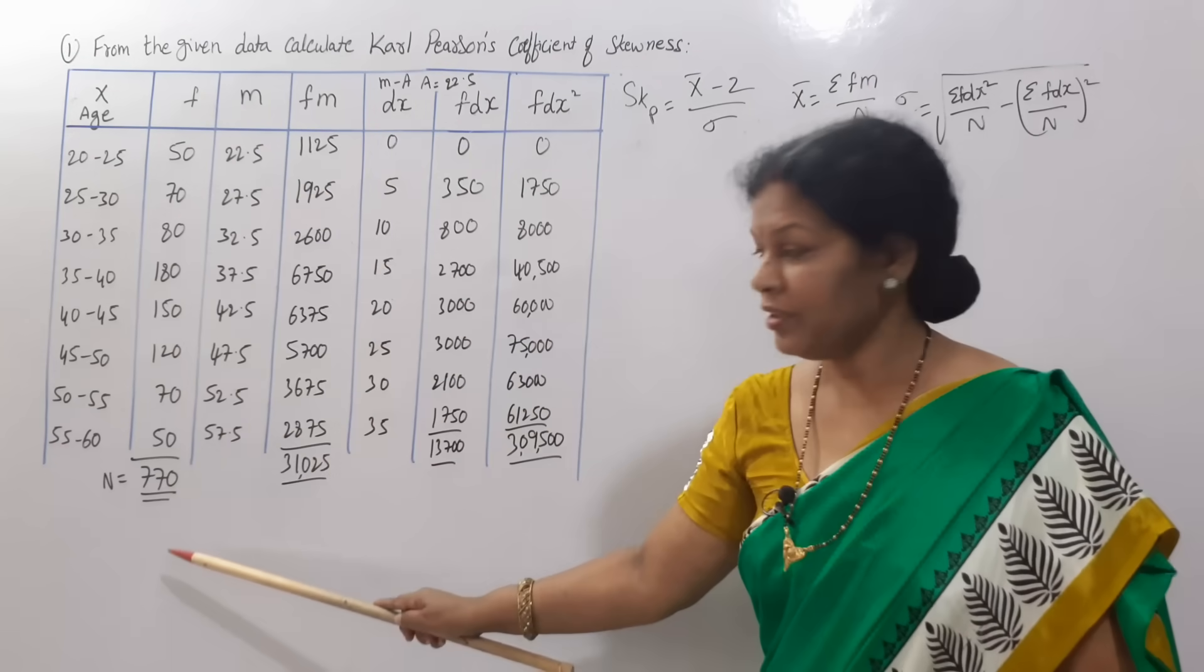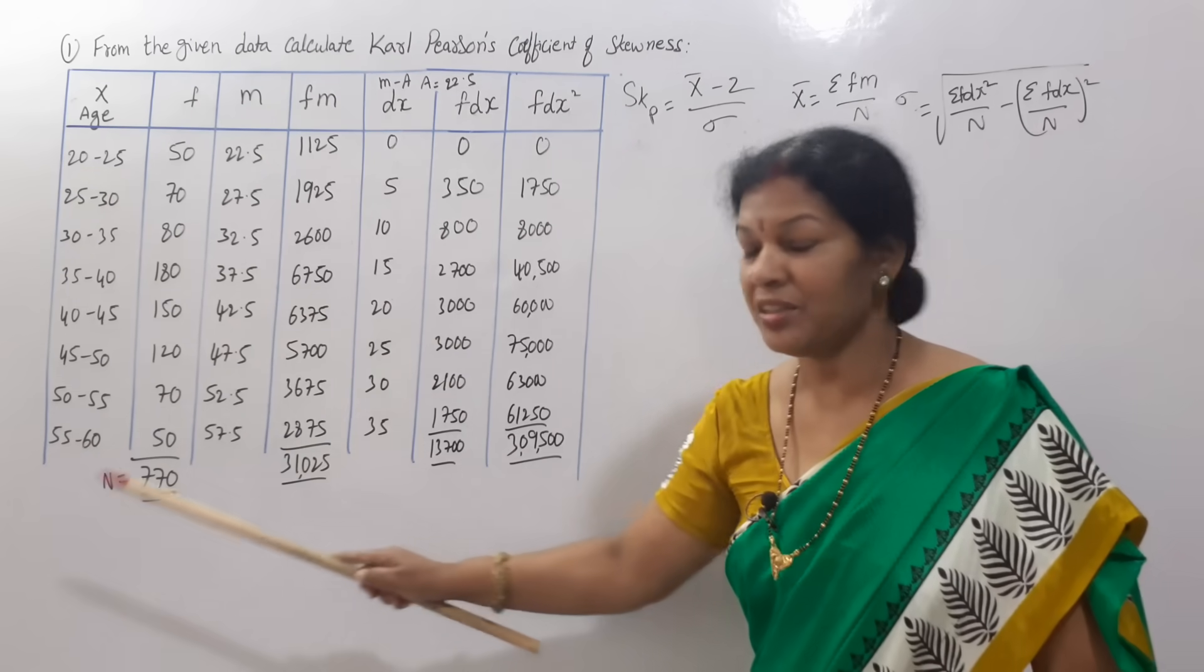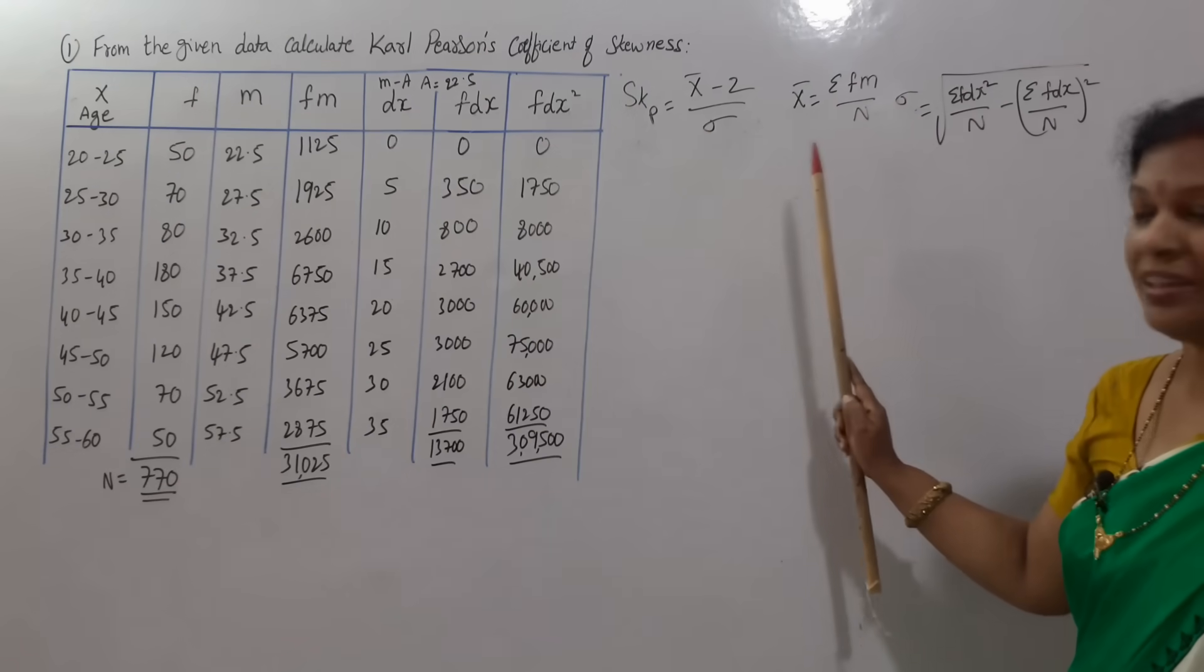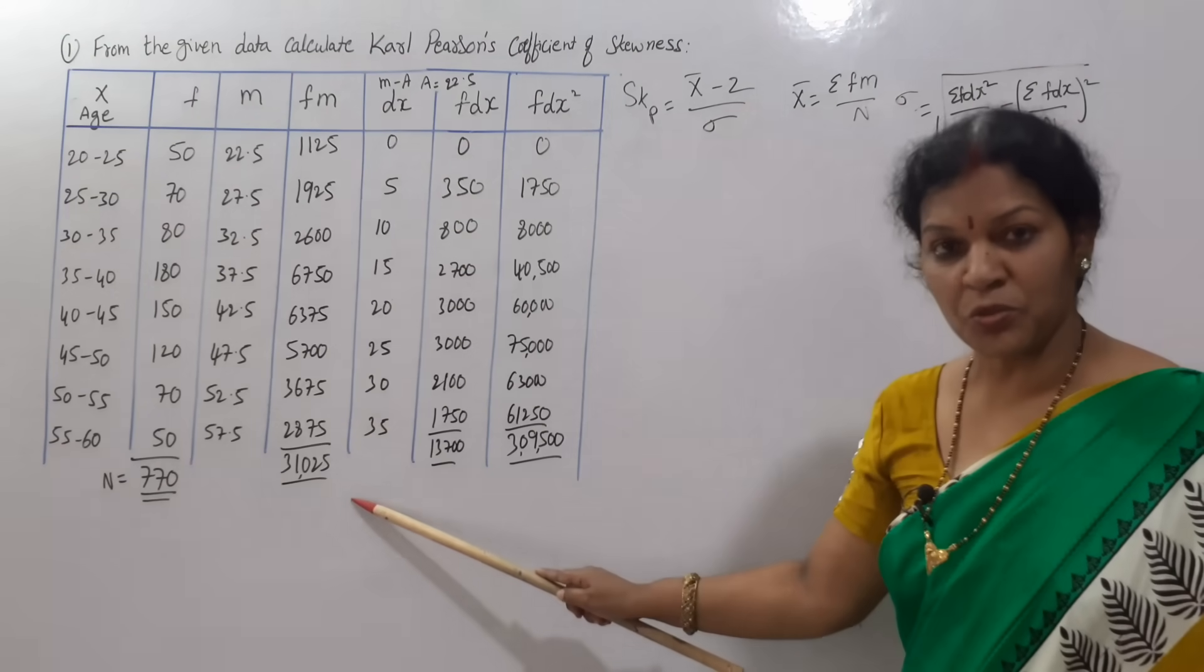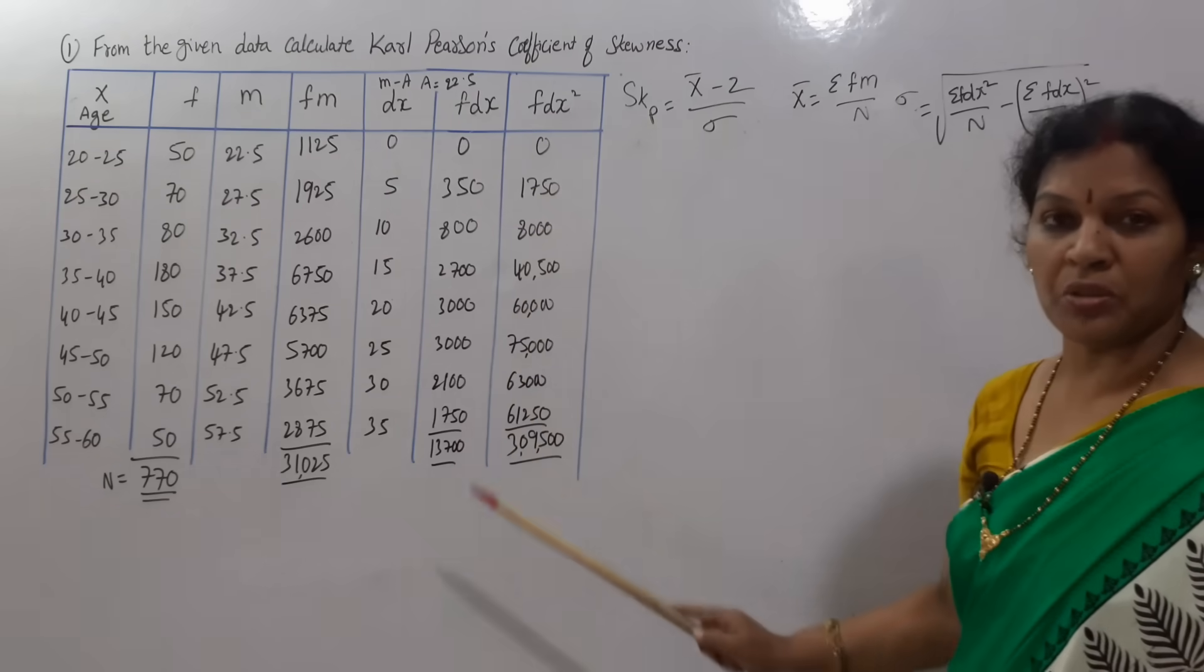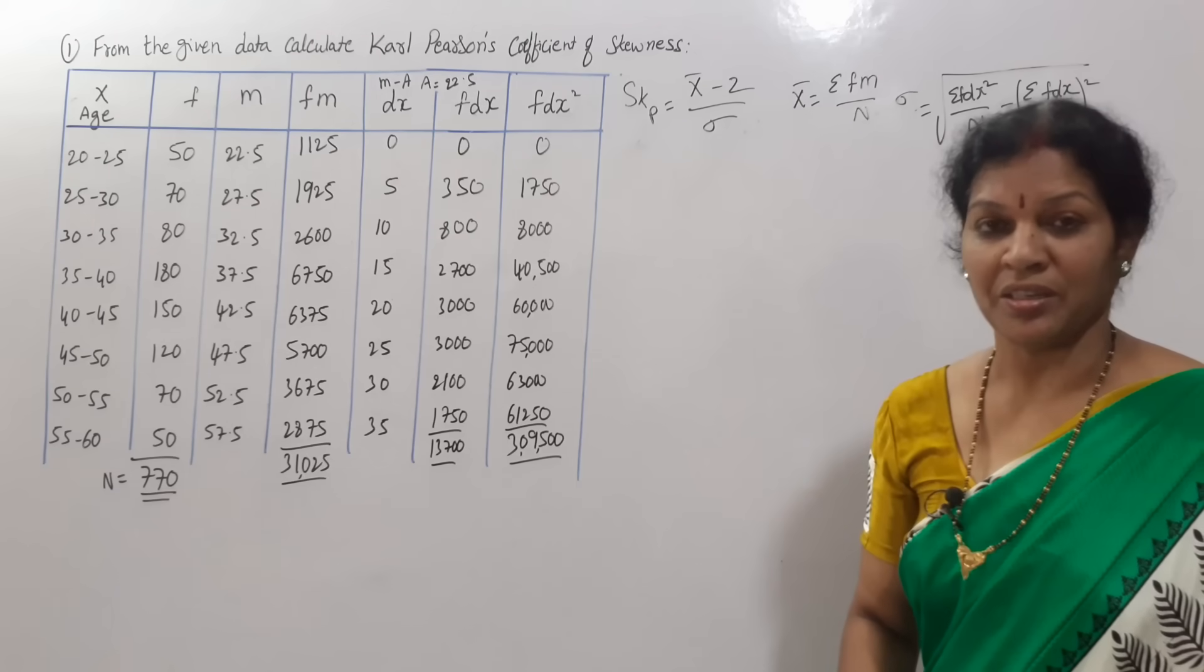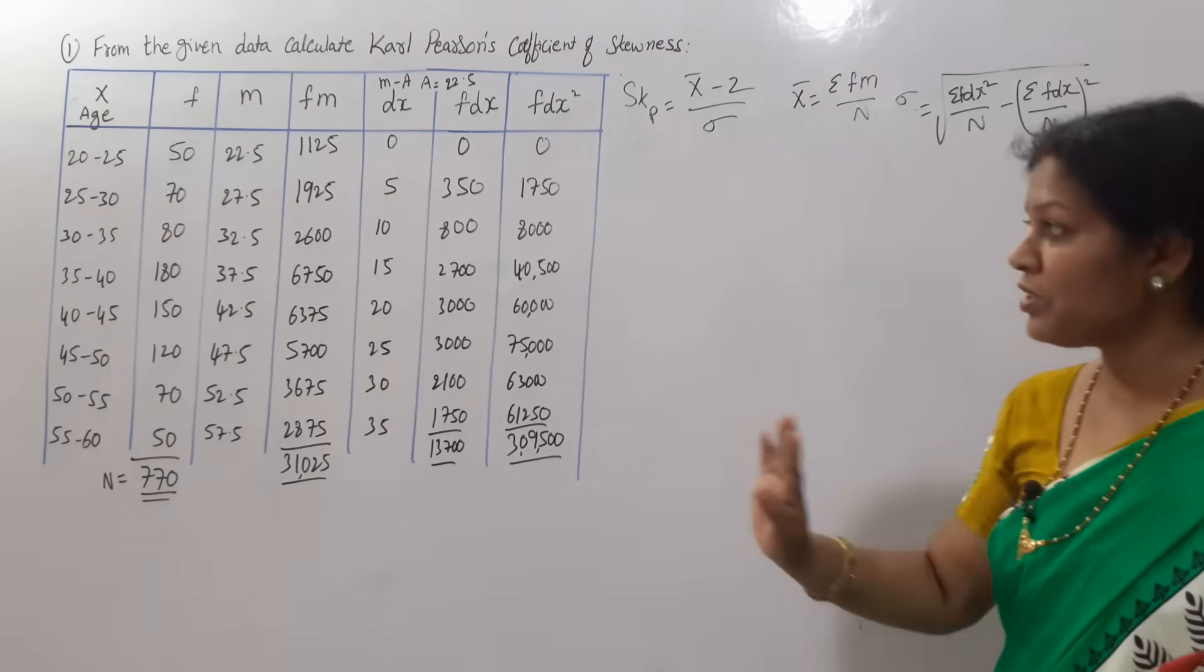Now apply the formula. Once you prepare these columns, total of the frequency, that's 770, this is n. We need f m, sigma f m by n. This column total is 31,025. We also need f d x and f d x square totals to calculate standard deviation.